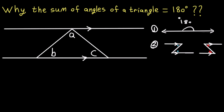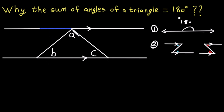Now you can see that the angle of the whole thing at the top is 180 degrees, because the angle of a straight line is 180 degrees. You can see it looks like a Z shape. This parallel line is parallel to the bottom side.